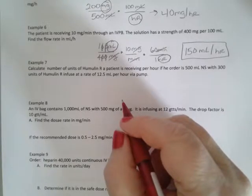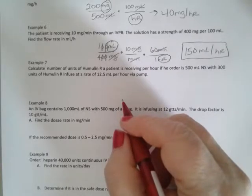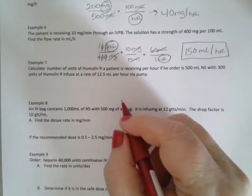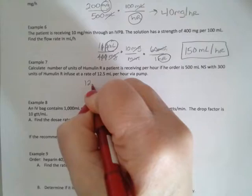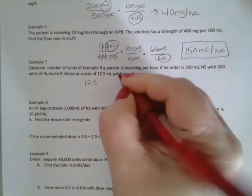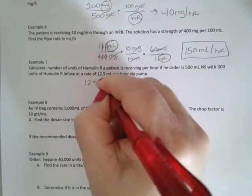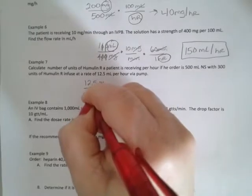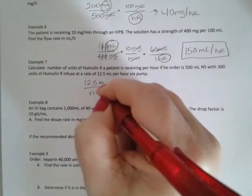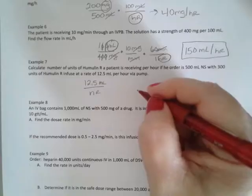In example seven, we have 12.5 milliliters per hour. We're calculating the number of units of Humulin a patient is receiving per hour.